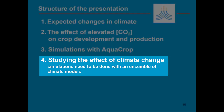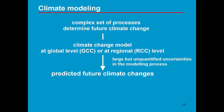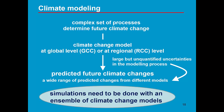To study the effect of climate change, simulations need to be done not with one climate model but with an ensemble of climate models. A climate model considers a set of processes which determine future climatic change. Distinction is made between global circulation models and regional circulation models. There are several models and they differ since they consider different processes. Due to large uncertainties in those models, the predictions by each model differ and we have a wide range of predicted changes. Therefore, simulations need to be done with an ensemble of climate change models.